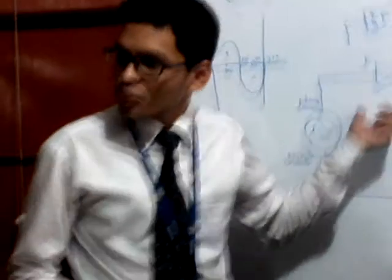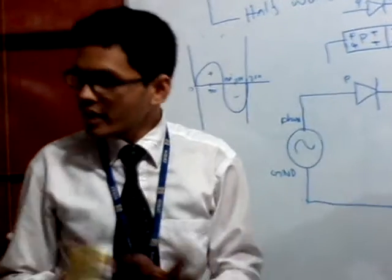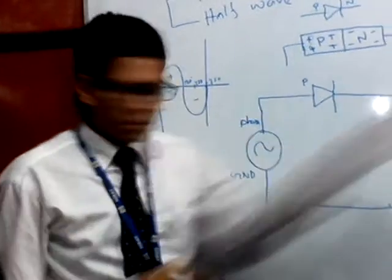Now let's come to the instruments. This is called an oscilloscope. It has got a screen — it is like a television — and through this screen we will observe the wave shape. The oscilloscope has some uses: we can observe the wave shape of a signal, whether the signal is noisy, distorted, or anything.